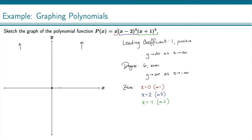And then I have my zeros. I've got a zero at x equals 0, at x equals 2, and at x equals negative 1.